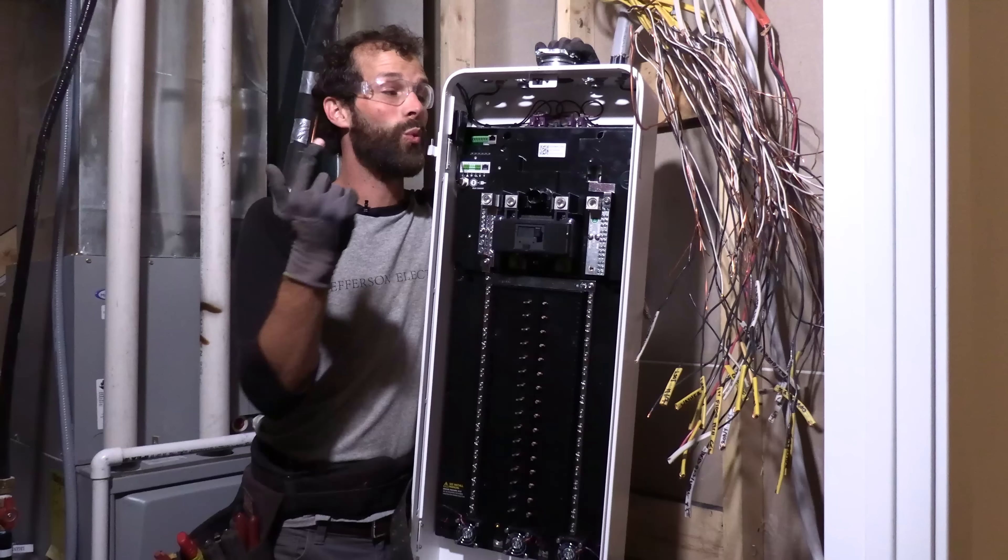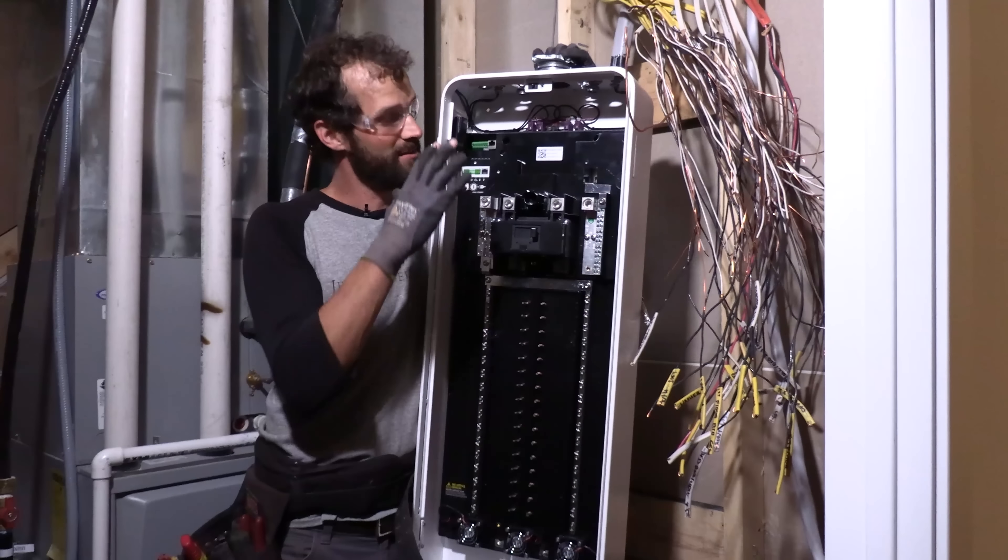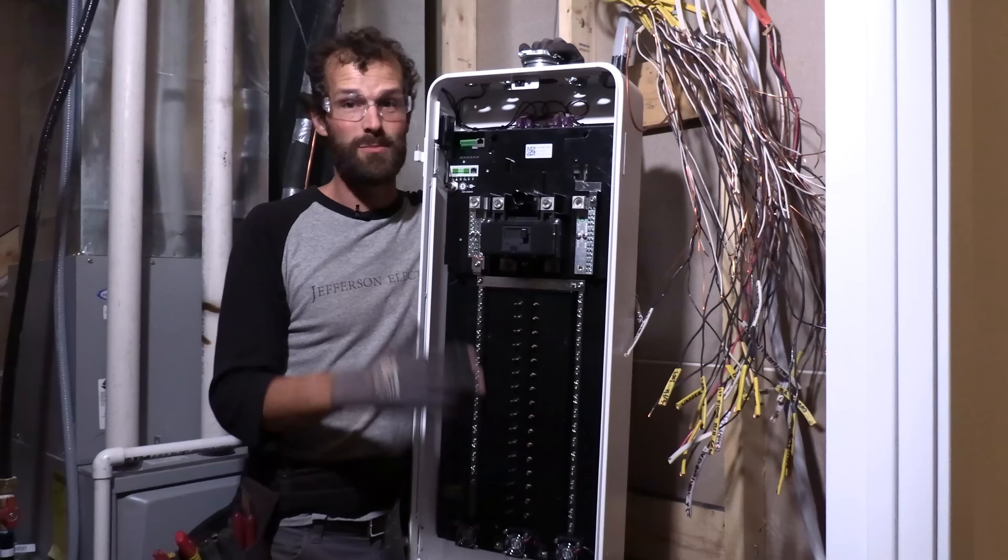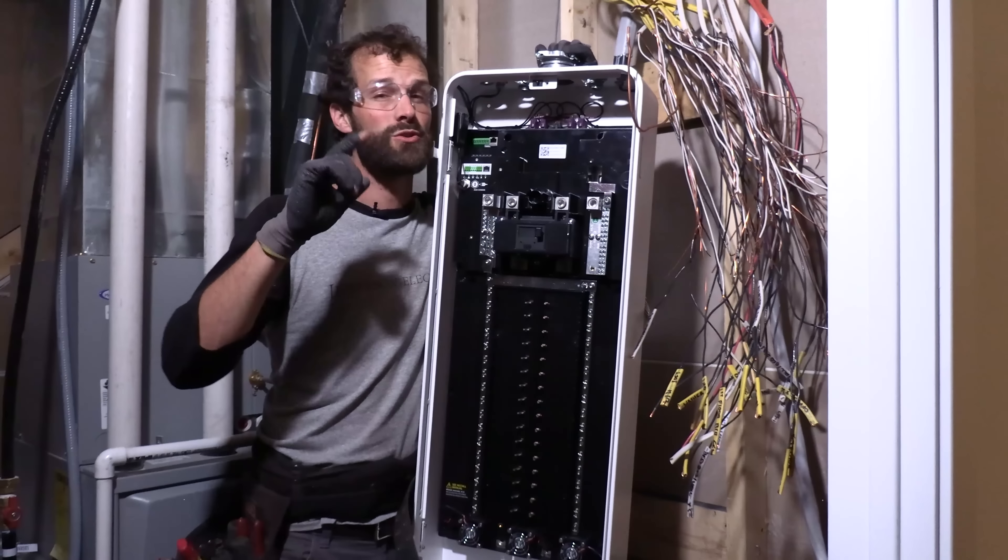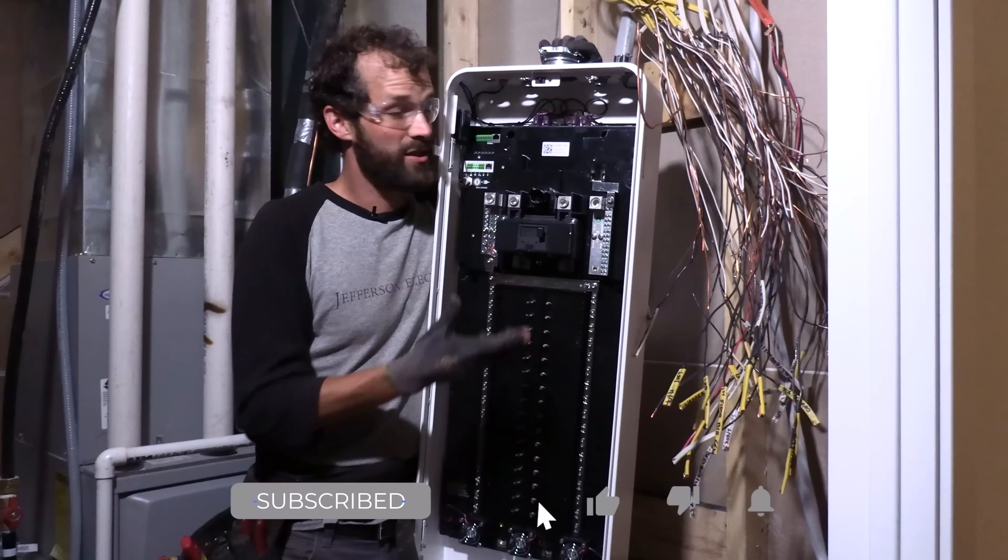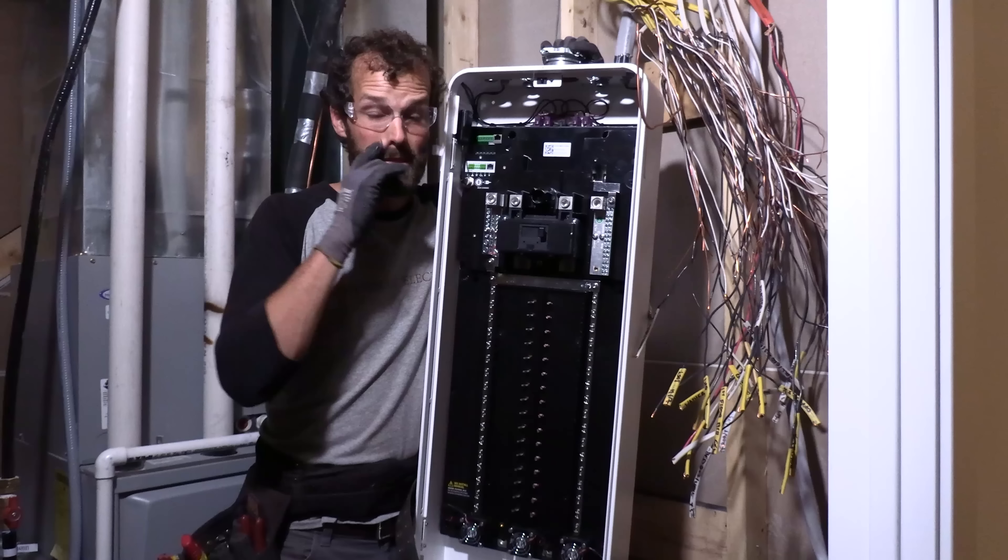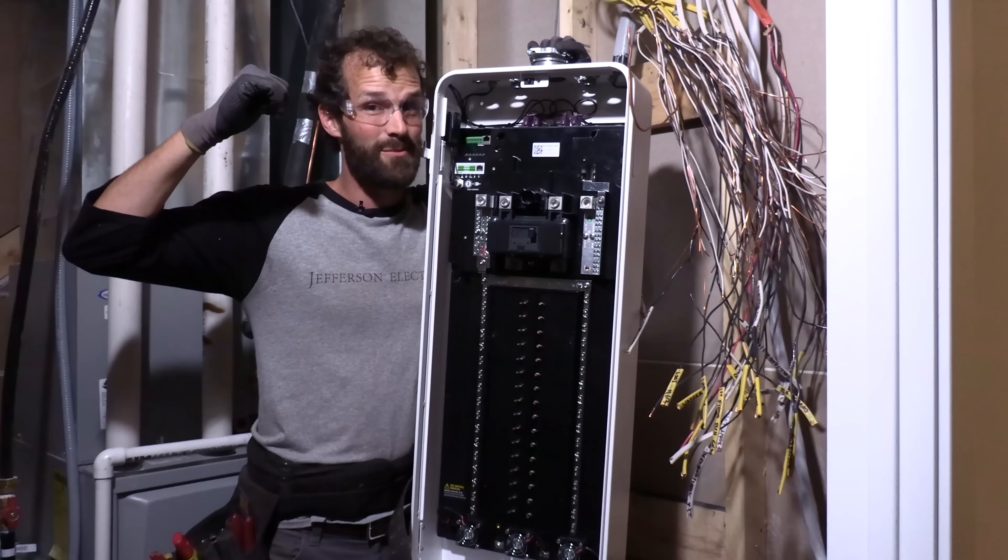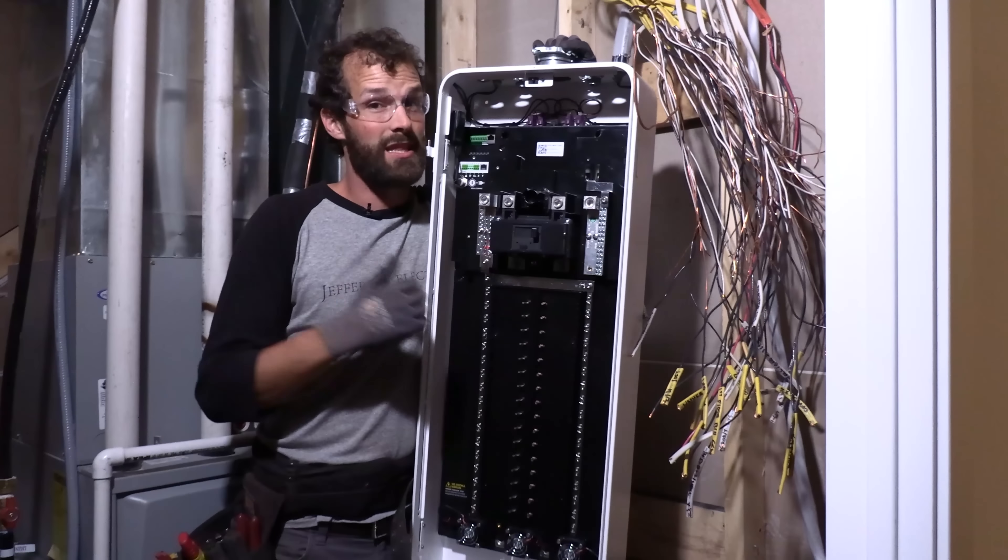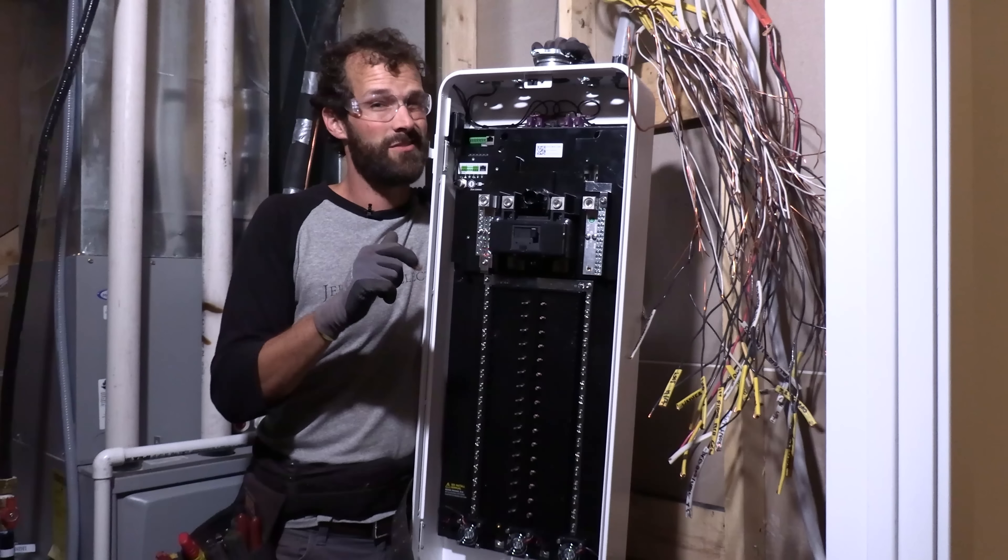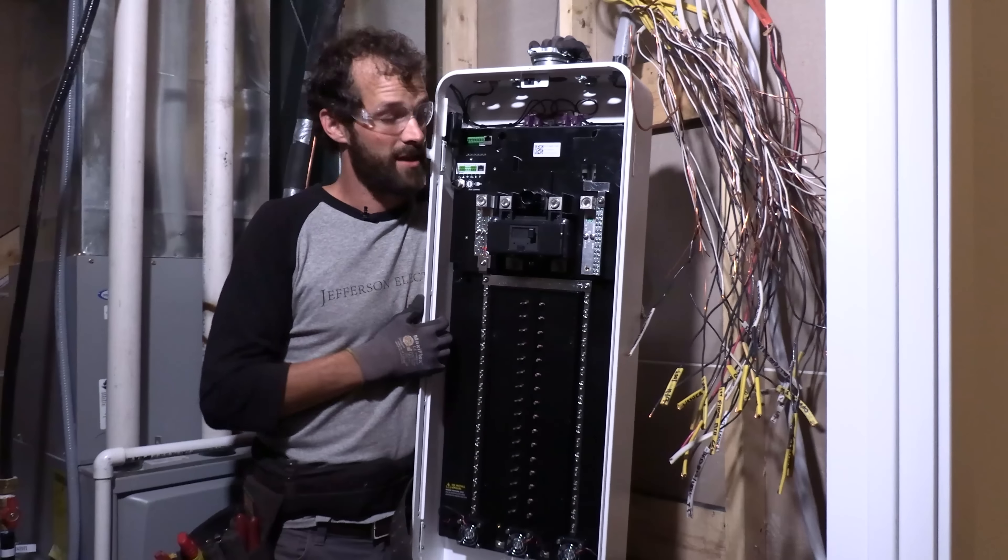In previous videos, I showed you, I unboxed it, explained some of the mechanical characteristics, some of the performance dynamics. We've got the old panel out, powers off to the house right now. Brand new Tesla solar roof is out back with Tesla Powerwall, Powerwall Plus. There's a lot of equipment in that garage.